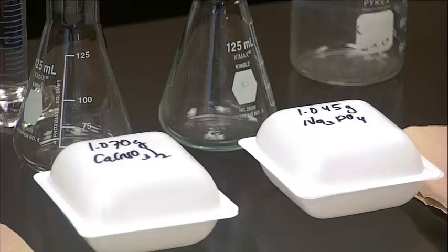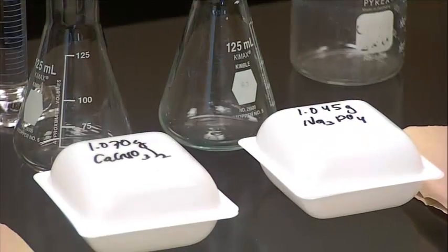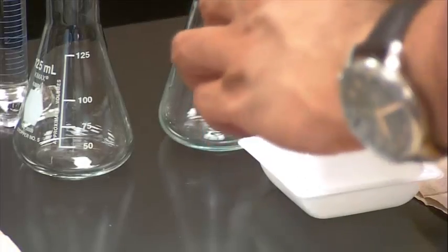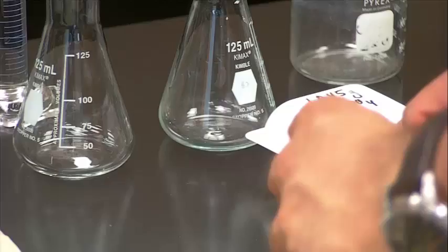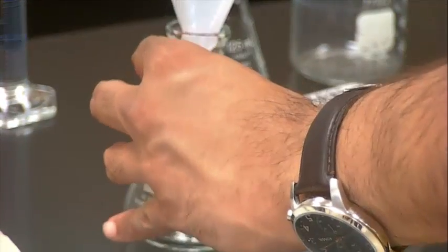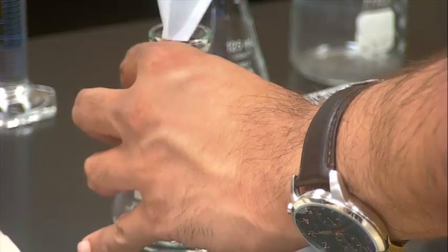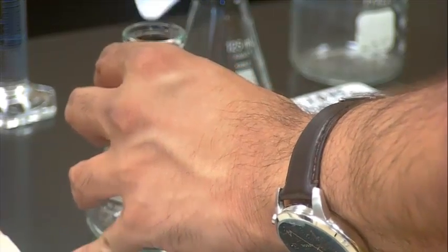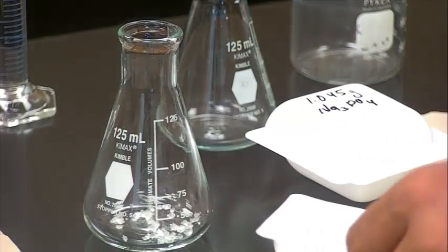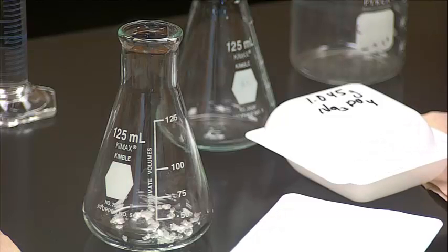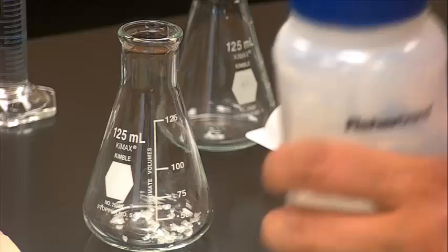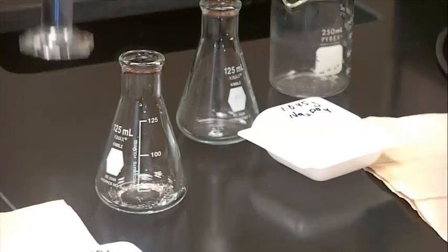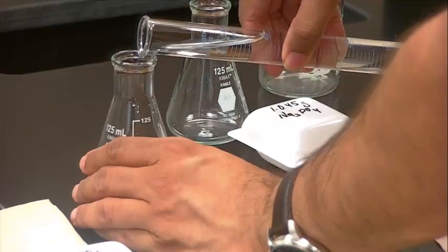I weighed out 1.070 grams of calcium nitrate. So notice it's not exactly 1.00 grams, but it's close enough. So I will take that and I will pour it, or actually dump it since it's a solid, into this Erlenmeyer flask. So that is my calcium nitrate. So it's very crystalline, and it may be hard to get out. So if it's hard to get out, you can take some DI water and pour the remnants in. Rather sticky. And you can just take some water and force that in. To facilitate solubilization, I'll add 50 mls of DI water to my calcium nitrate, and I'll stir it up.